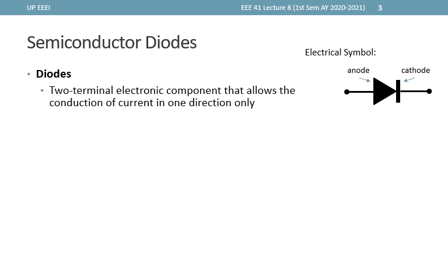Diodes are two-terminal electronic components that allow the conduction of current in one direction only. The electrical symbol for a diode is the one shown on the right, with the two sides being identified as the anode and the cathode. There are other symbols for different kinds of diodes, but we will just go with this generic symbol first.